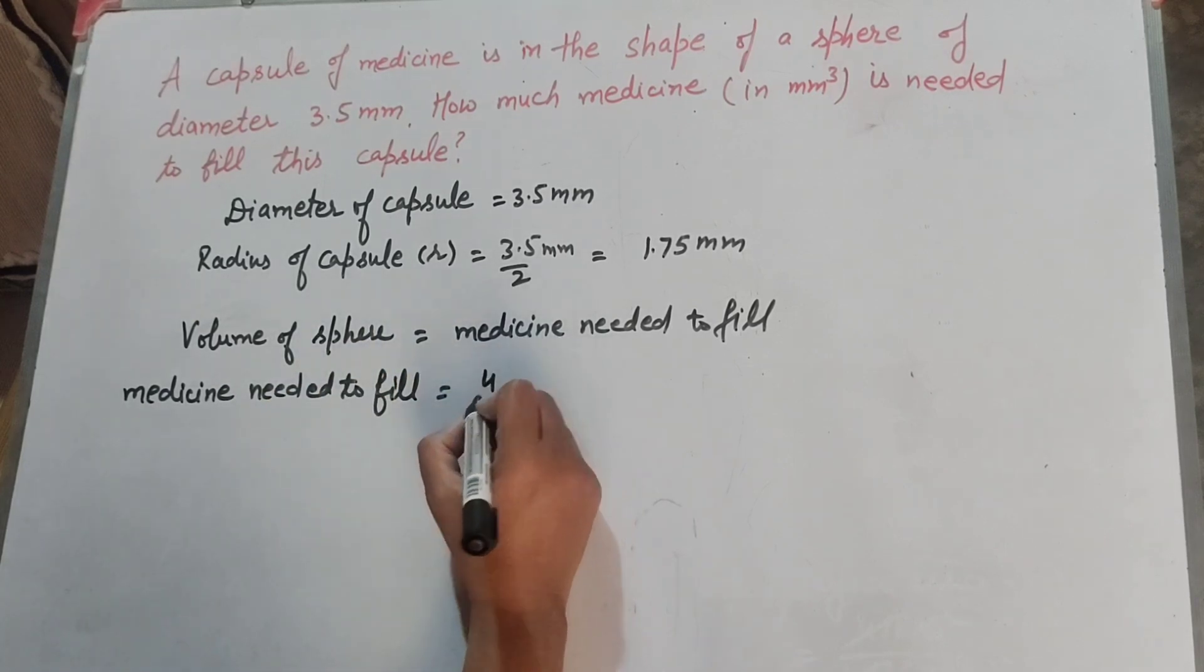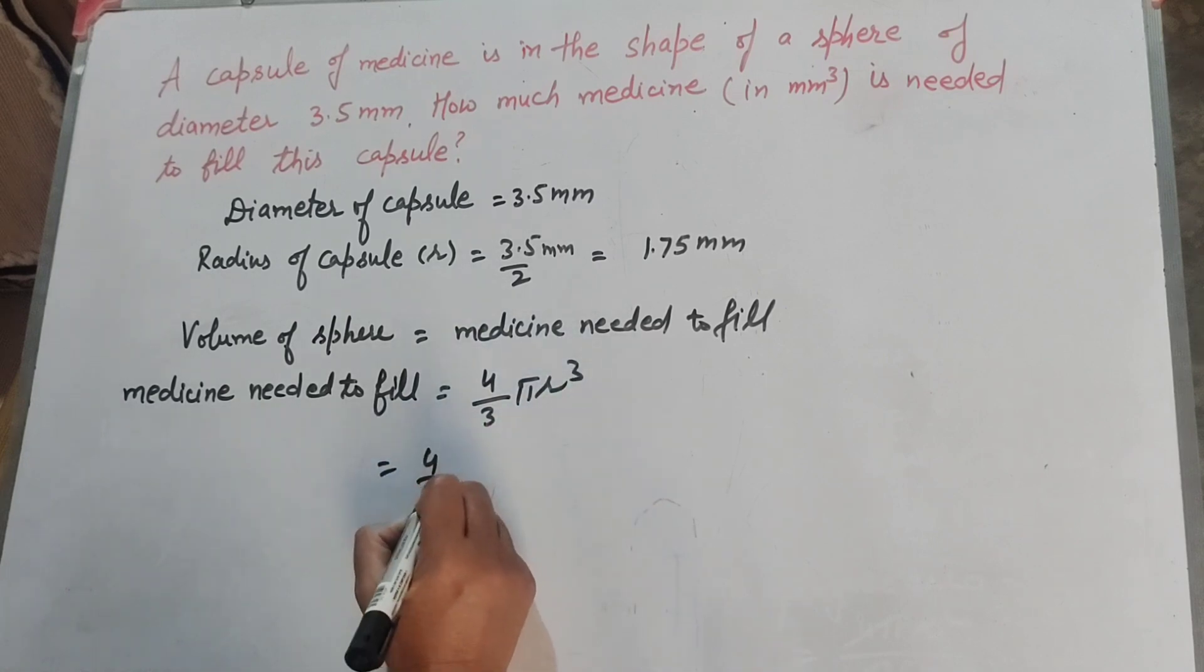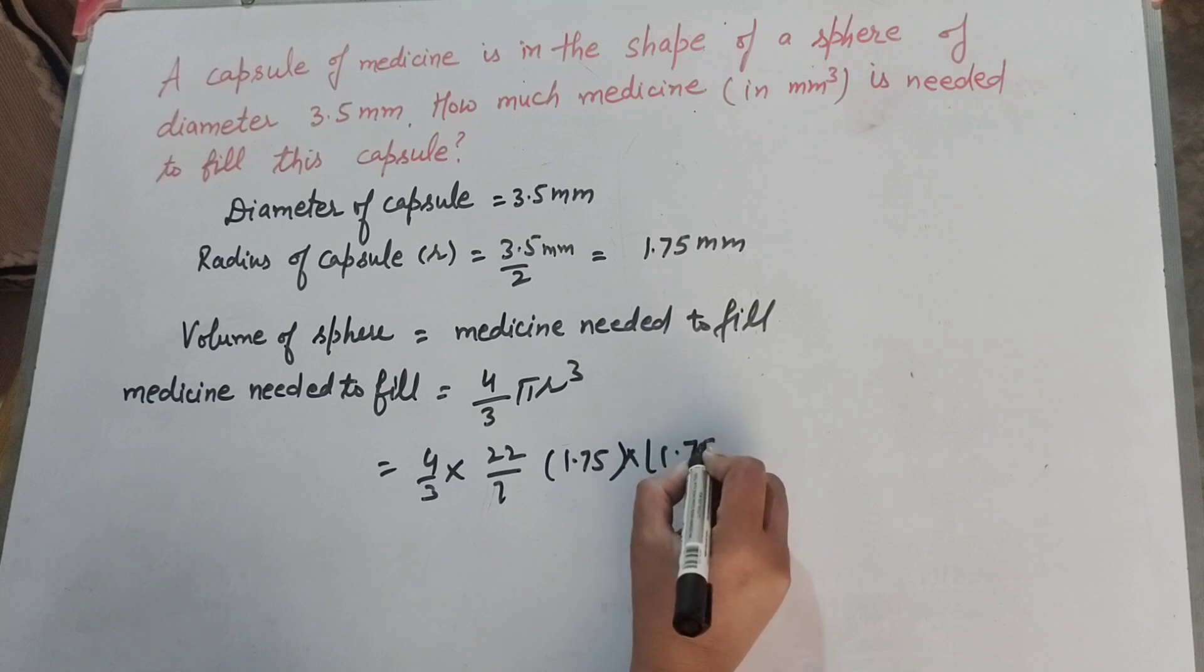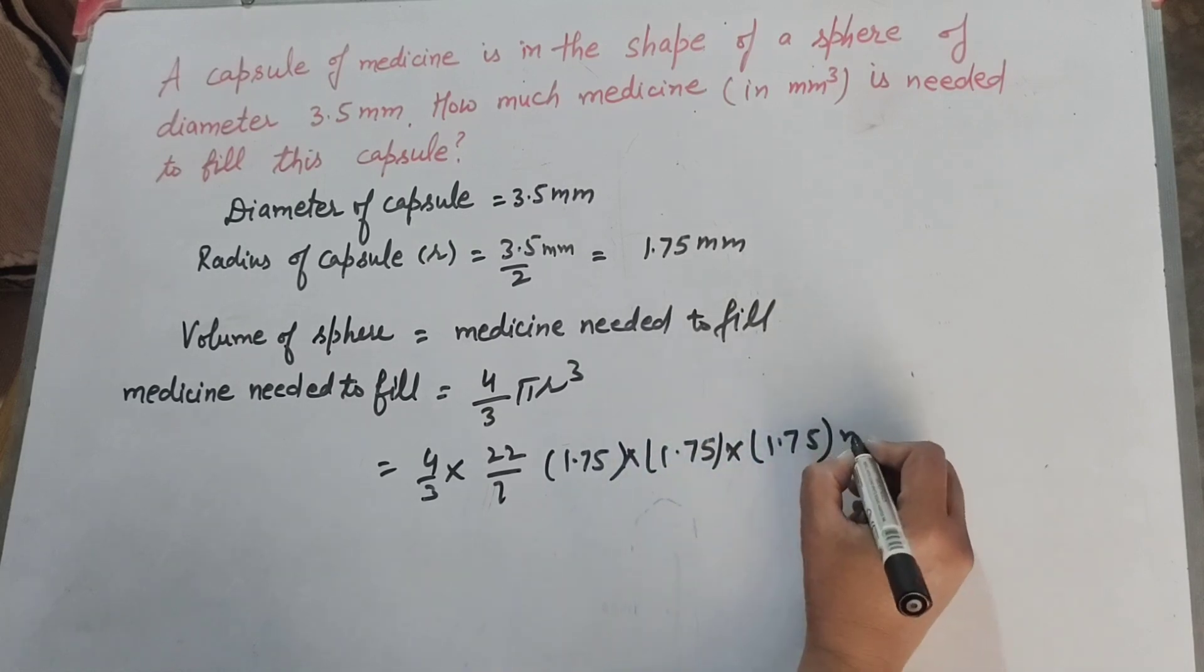Medicine needed to fill it is equal to volume of sphere. We know the formula to find volume of sphere: it is 4/3 π r³. So 4/3, π value is 22/7, r³, r is radius that is 1.75 × 1.75 × 1.75 mm³.